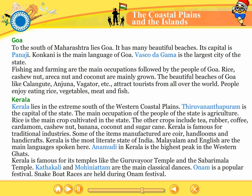Kerala lies in the extreme south of the western coastal plains. Thiruvananthapuram is the capital of the state. The main occupation of the people is agriculture. Rice is the main crop cultivated in the state. The other crops include tea, rubber, coffee, cardamom, cashew nut, banana, coconut and sugarcane. Kerala is famous for traditional industries. Some of the items manufactured are coir, handlooms and handicrafts. Kerala is the most literate state of India. Malayalam and English are the main languages spoken here. Anamudi in Kerala is the highest peak in the Western Ghats. Kerala is famous for its temples like the Guruvayur Temple and Sabarimala Temple. Kathakali and Mohiniyattam are the main classical dances. Onam is a popular festival. Snake boat races are held during the Onam festival.